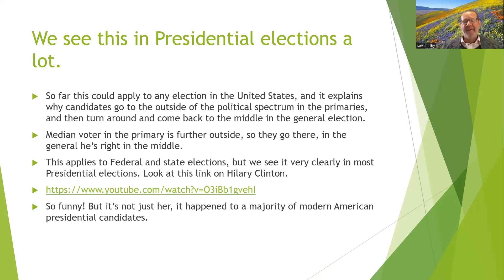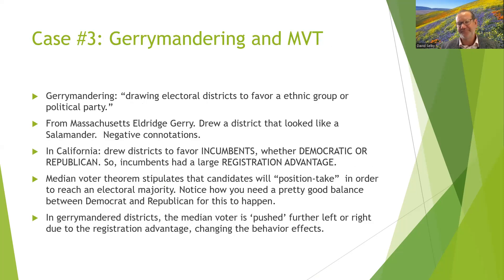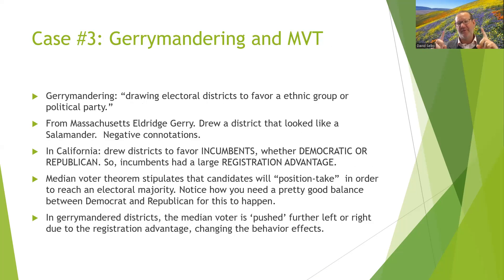The median voter in the primary is further outside. This applies to both federal and state elections but we see it most clearly in presidential elections. If you were paying attention to 2016, this is largely what happened to Hillary Clinton — one of maybe ten reasons she lost. In real life we do primaries first: go to the outside, then in the general election you turn around and race back to the middle.